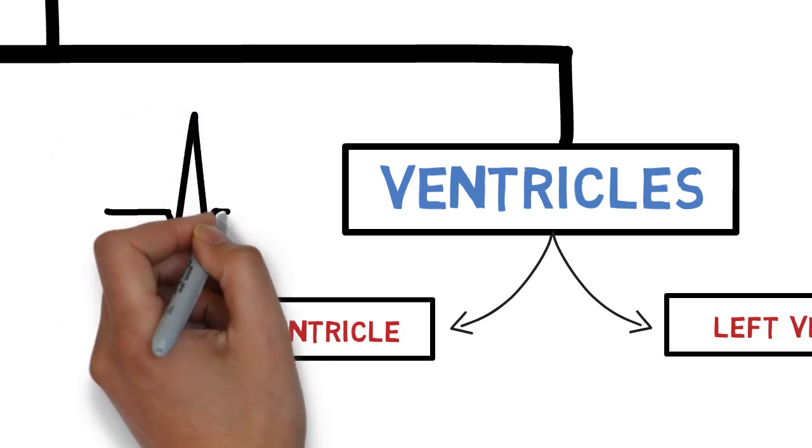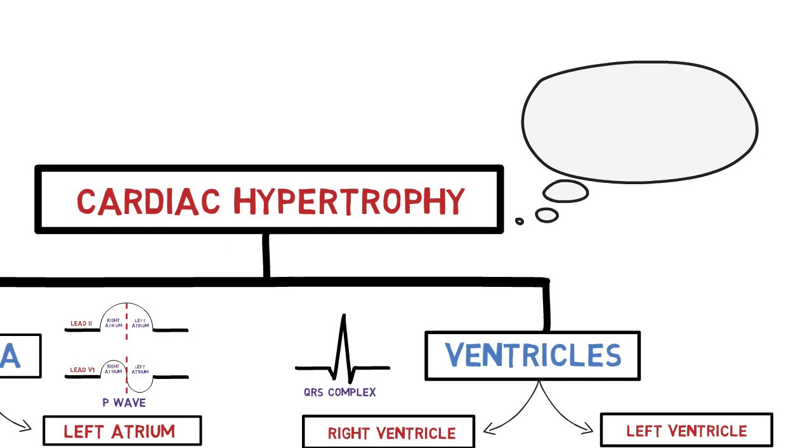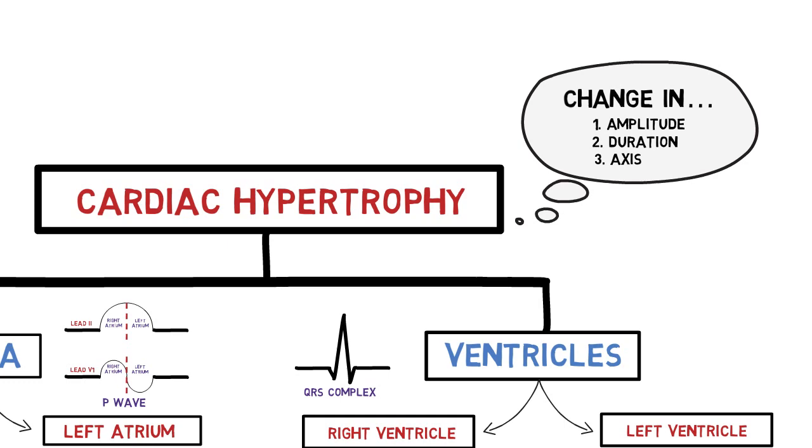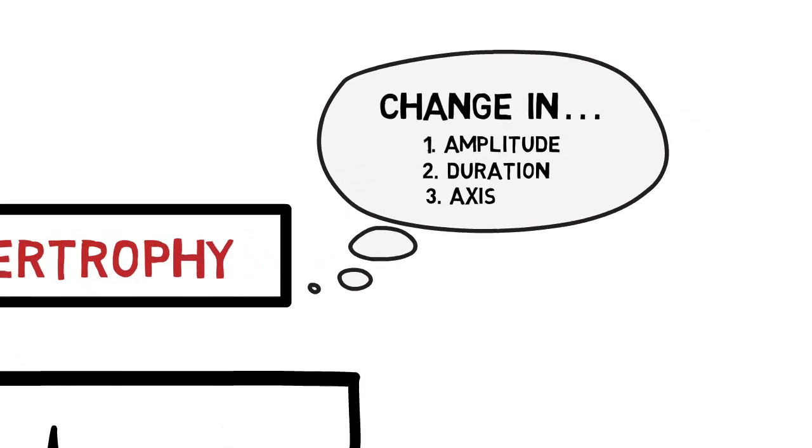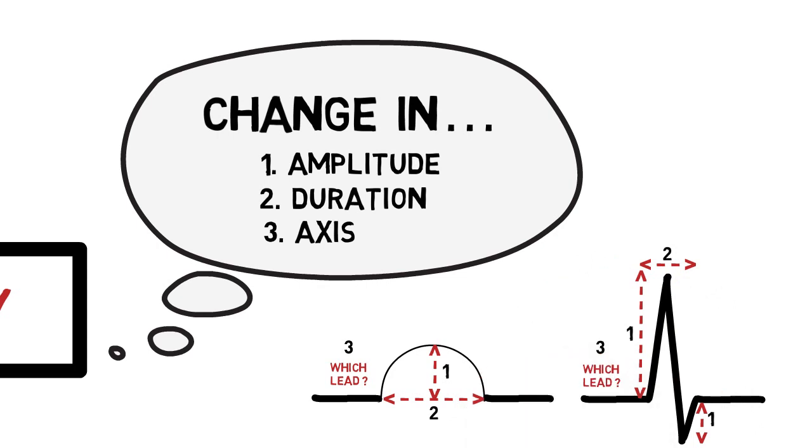In ventricle, the changes will be noticed in QRS complex since it indicates ventricular depolarization. Three things to keep in mind. Generally, the changes associated with hypertrophies can be seen in the wave's amplitude, duration, and its axis. In regards to wave configuration, changes in amplitude means either it is closer or away from baseline. Duration means a wave will be wider or narrower. Changes in axis means the wave configuration that we normally see in one particular electrode may be seen in other electrodes. So, if atria, we are talking about the P-wave's amplitude, duration, and its axis. And if ventricles, we are talking about the changes in QRS complex according to these three domains as well.